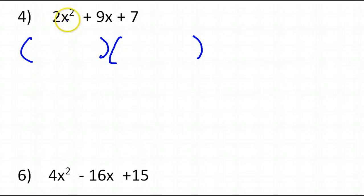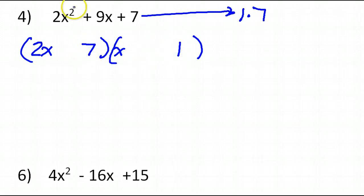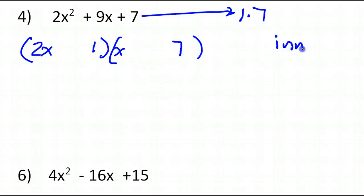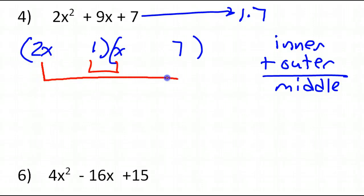It matters whether I put the 7 here and the 1 here, or the 1 here and the 7 here. Let's say we did it with 1 in the first spot. Inner plus outer equals middle. Inner I have 1x, outer I have 14x. Can I get 9x out of this if I pick the signs right? No — the best I could do would be 13 if I subtract. So this is not working. Let's switch these.